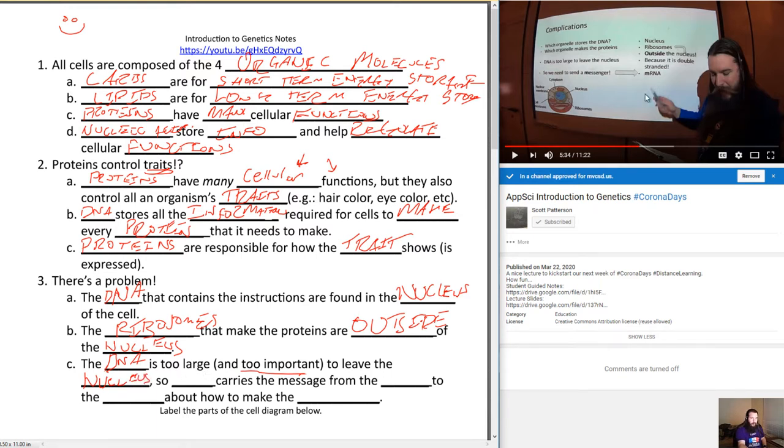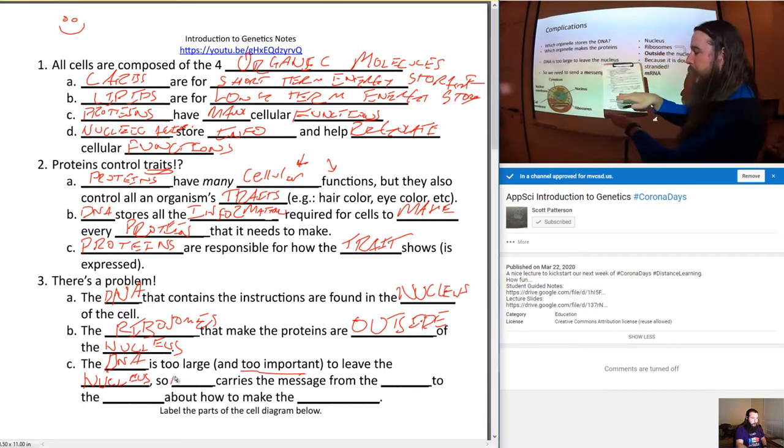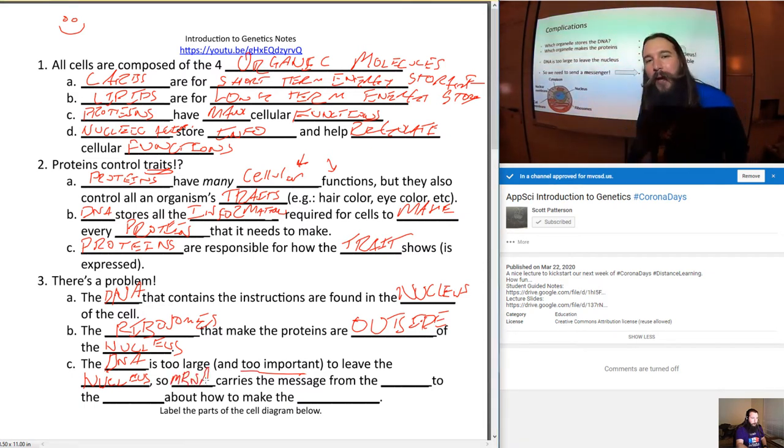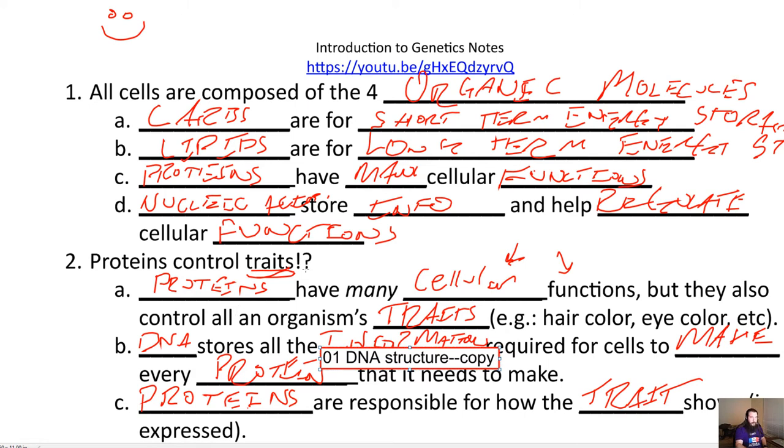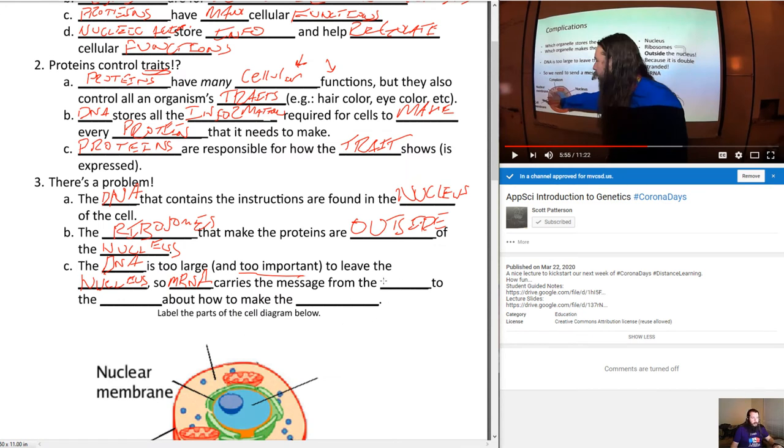You'll notice the ribosomes are outside of the nucleus. The ribosomes are outside of the nucleus, but the DNA is inside the nucleus. How is it supposed to work? The problem is the DNA is too large, and really it's too important to be leaving the nucleus. So instead we send a messenger, and we're going to call that mRNA, which we'll talk about in just a moment.